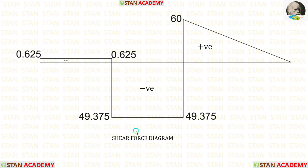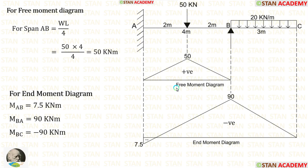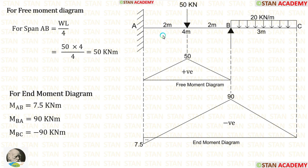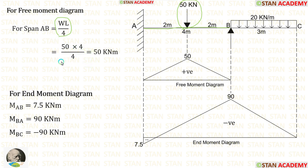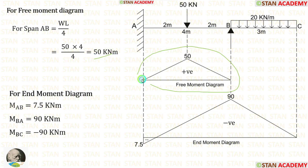Using the shear force values, we can make the shear force diagram. Now let us make the free moment diagram. We have to make the free moment diagram only in span AB; no need to make it for the overhanging span BC. For the free moment diagram, we consider span AB as a simply supported beam. With a point load of 50 kN at the center, the maximum moment is WL/4, giving 50 kNm. Using this value, we can draw the diagram.